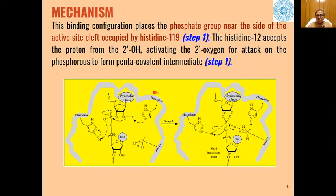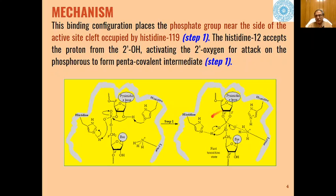Then histidine-12 accepts the proton from the 2′ position of the RNA, and this proton is abstracted by histidine-12. This oxygen then attacks the electrophilic phosphorus atom to form a pentavalent intermediate.